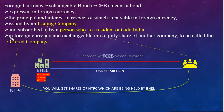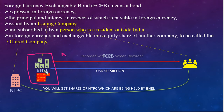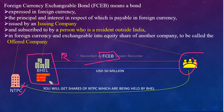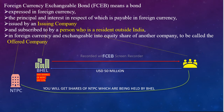Ab hum dekhte hain ki Offered Company ka kya matlab hai aur Issuing Company ka kya matlab hai. BHEL ke paas maan lo Reliance ke shares bhi pade hain. To kya investors ko hum option de sakte hain ki aap Reliance ke shares le sakte hain maturity date par? The answer is no. BHEL ne NTPC ke shares bhi khareede hain aur Reliance ke shares bhi, lekin jab hum investors ko FCEB offer kar rahe hain to hum sirf NTPC ke shares de sakte hain, Reliance ke nahi. Iske peechhe kya logic hai, isko hum next slide mein samajhte hain.